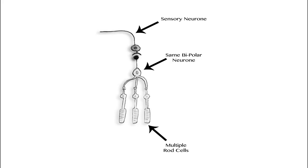Additionally, many rod cells are connected to the same bipolar neuron which is connected to a single sensory neuron. The result of this is that they provide visual information with low acuity.